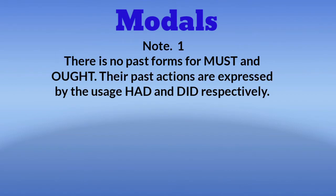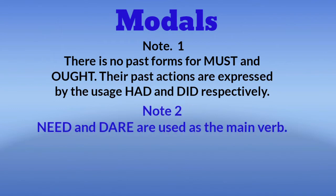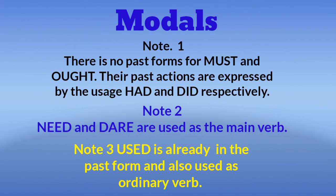Note 1: There is no past form for 'must' and 'ought'; their past actions are expressed by the usage of 'had' and 'did' respectively. Note 2: 'Need' and 'dare' are used as main verbs. Note 3: 'Used to' is already in the past form and is also used as an ordinary verb.